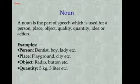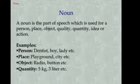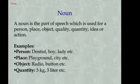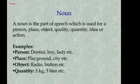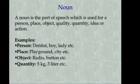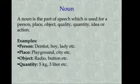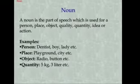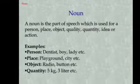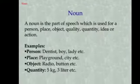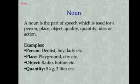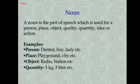For example — Person: dentist, boy, lady etc. Place: playground, city etc. Object: radio, pattern etc. Quantity: 5 kg, 3 litre etc.